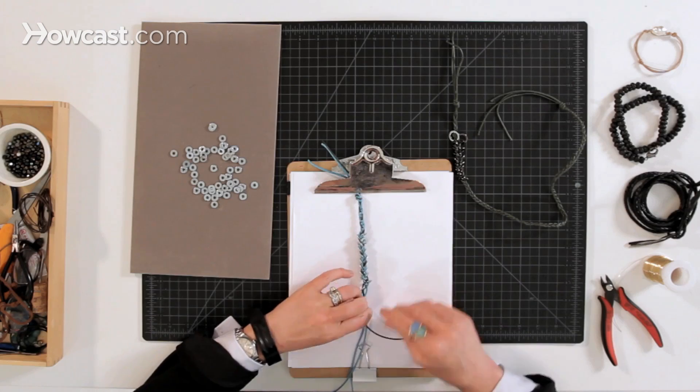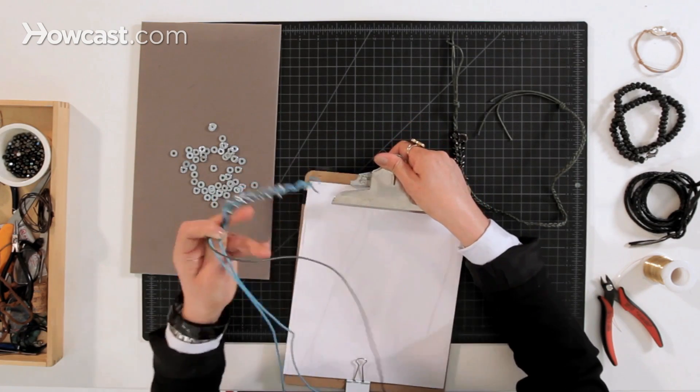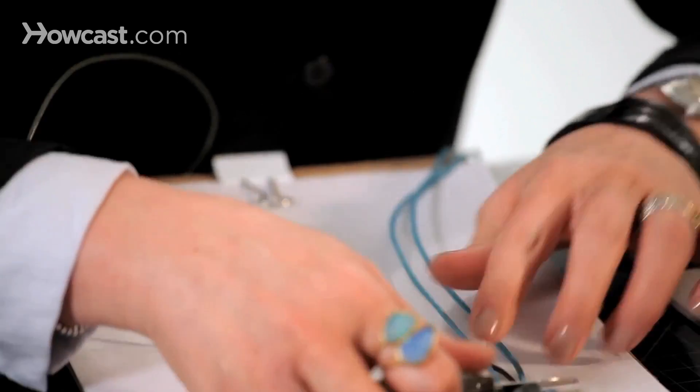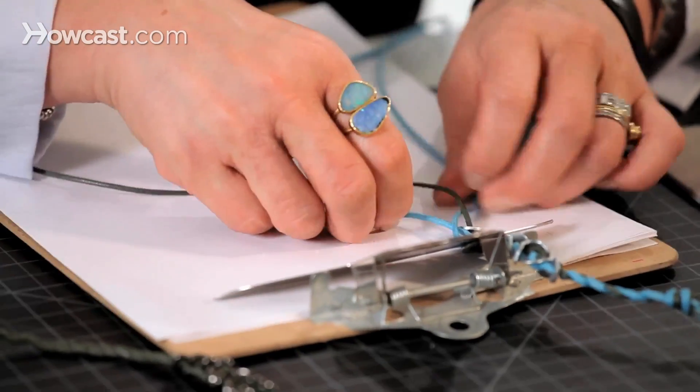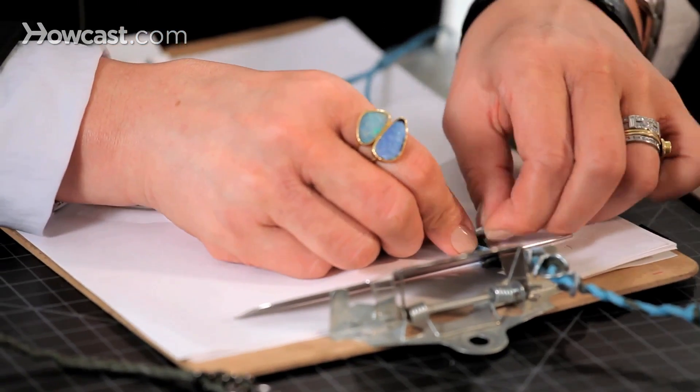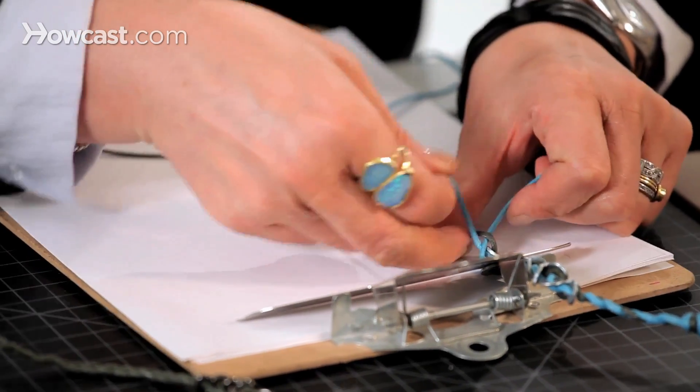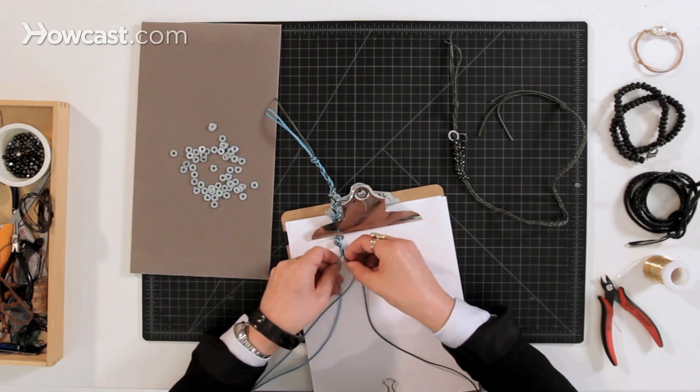And now, because I'm getting to the bottom of the clipboard and I need more of a grip, I'm just going to move the whole unit up on the clipboard so that we get a better grip on the whole thing. And then we just continue braiding.